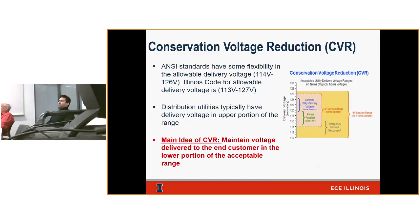Conservation voltage reduction — if you look at the ANSI range, it indicates the allowable delivery voltage to the end user. For 120-volt base, the ANSI range is 114 to 126 volts. Illinois had to be different, and our code here is 113 to 127. So Ameren Illinois and ComEd have to meet that 113 to 127 voltage range for our customers as a delivery voltage.